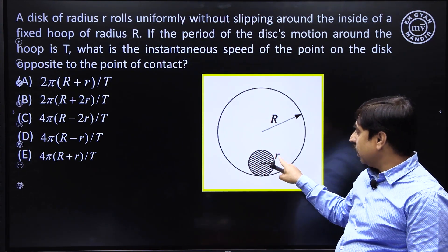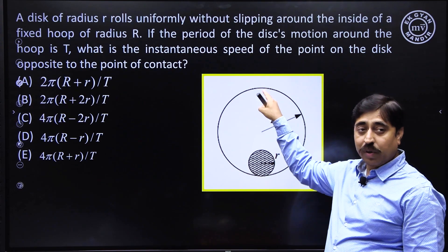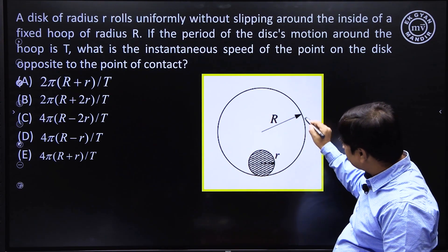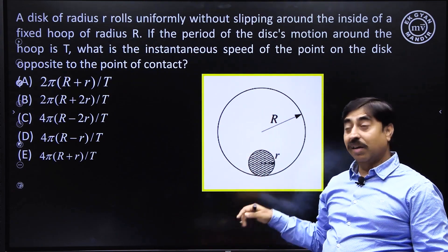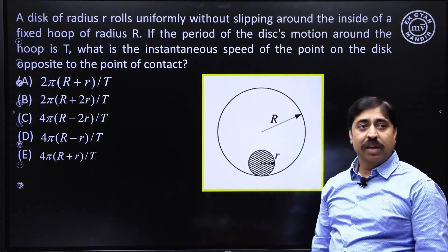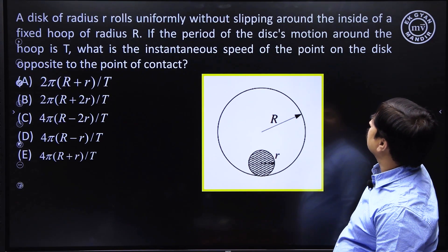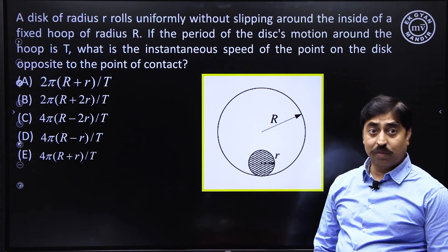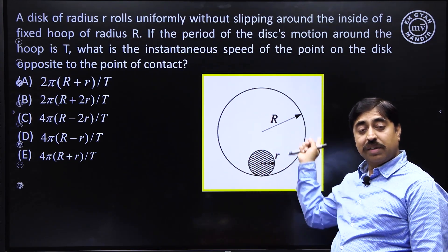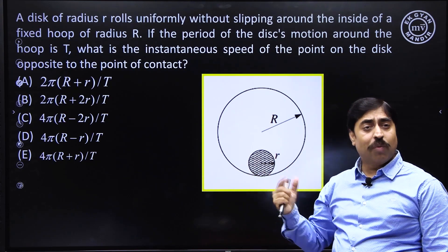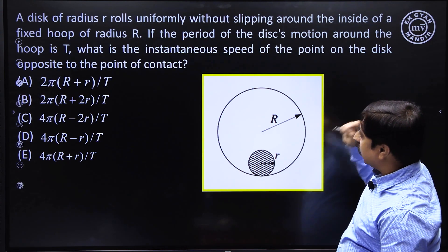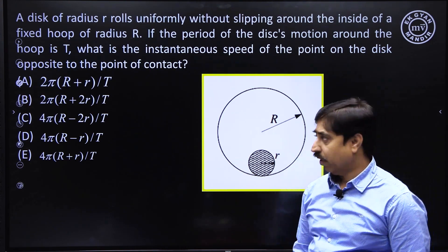This disk is rolling without slipping inside this hoop. This hoop is the track, and the disk is rolling inside the hoop, inside the ring. If the time period of the disk's motion around the hoop is T, what is the instantaneous speed of the point on the disk opposite to the point of contact?